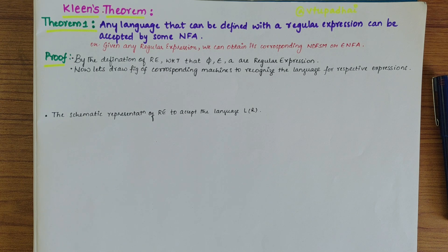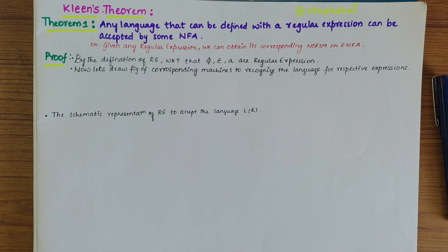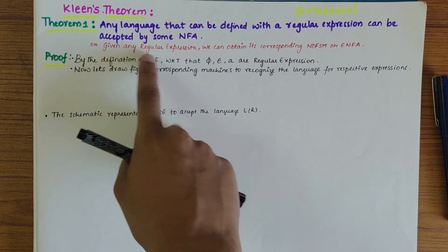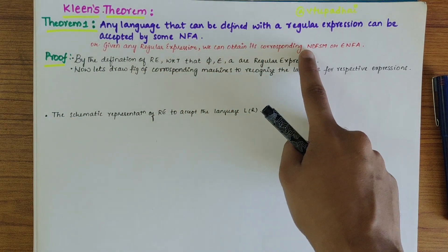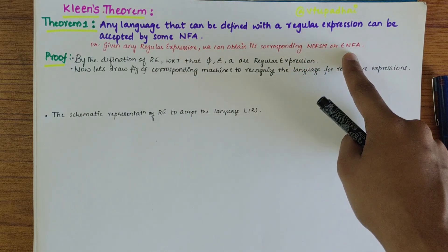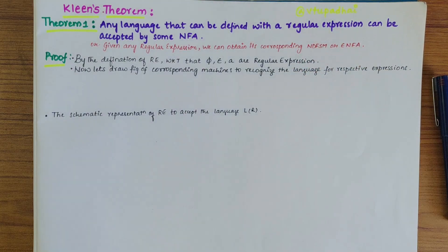Proof of the first part of Kleene's theorem. The theorem states that any language that can be defined with a regular expression can be accepted by some NFA. In simpler terms, given any regular expression, we can obtain its corresponding Epsilon-NFA. So let's start with the proof.